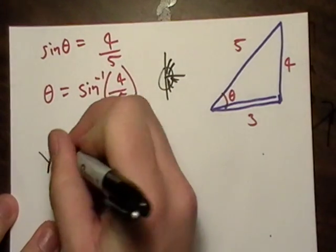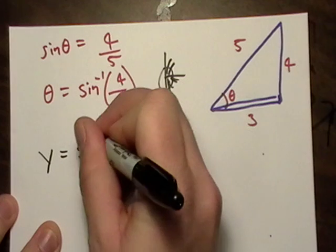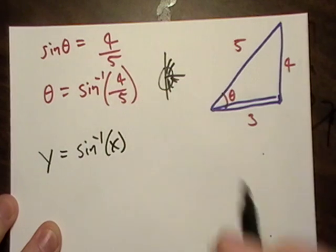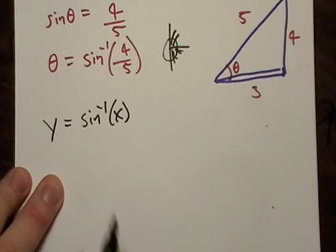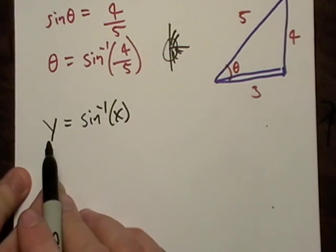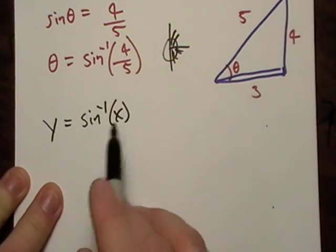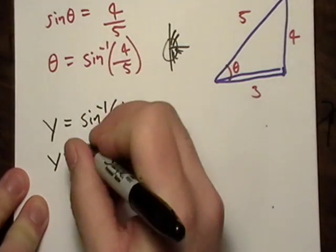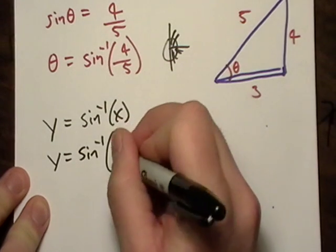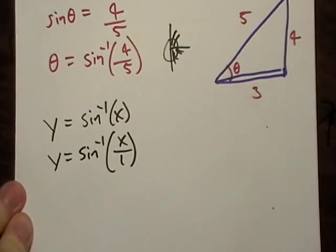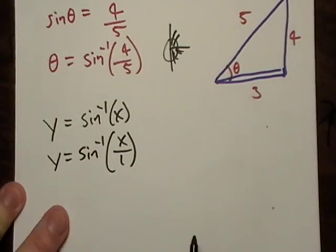Let's say I have y equals sin^(-1)(x). That just basically means y is the angle whose sine is x over 1. Usually, that's how I write these things. I rewrite these things like this all the time just because I know what I'm dealing with.